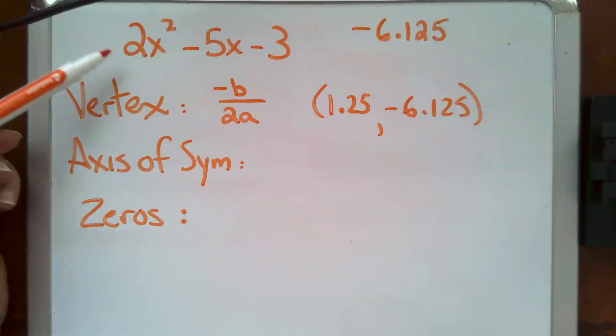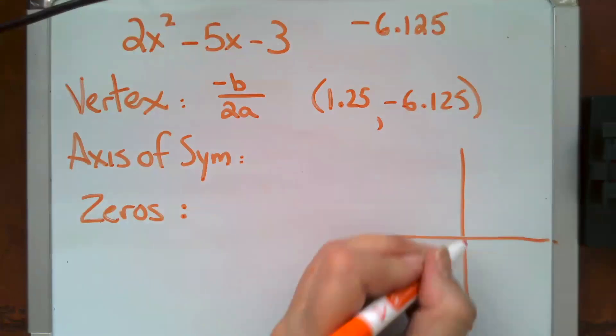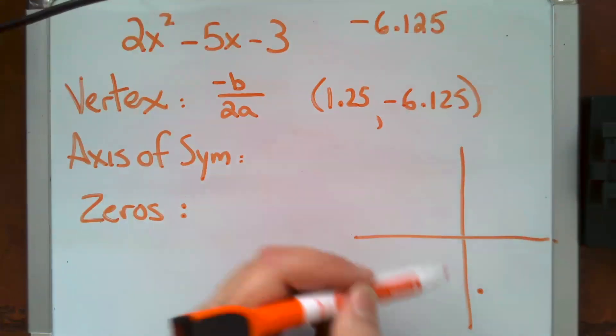So in our case, we see that our a, the coefficient of our squared term is positive. That means our parabola opens up and our vertex is our minimum. So if we wanted to give ourselves a little sketch, we would be over 1.25, down negative 6.125 or something along those lines, and we know that we're going up.